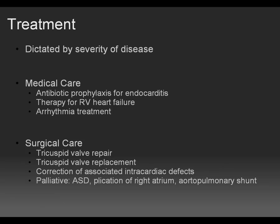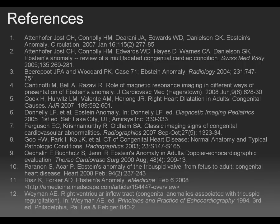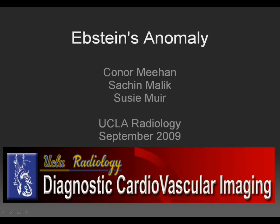Treatment for Epstein's anomaly is dictated by disease severity. Routine medical care includes antibiotic prophylaxis for endocarditis, therapy for right ventricular heart failure, and arrhythmia control. Surgical care options include tricuspid valve repair, tricuspid valve replacement, and correction of associated intracardiac defects. Palliative procedures may be performed, such as plication of the right atrium and aortopulmonary shunt. This concludes our UCLA Radiology podcast on Epstein's anomaly. Thank you for your attention.